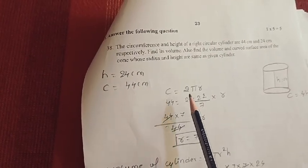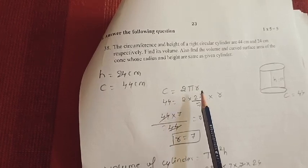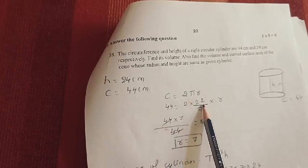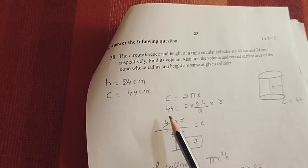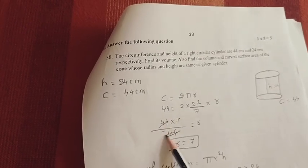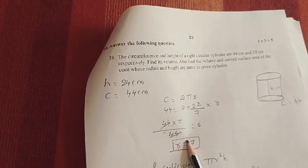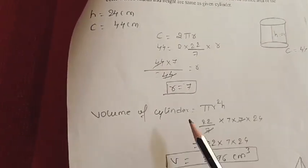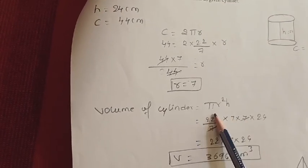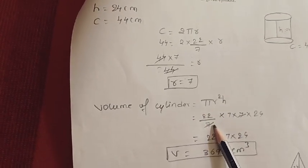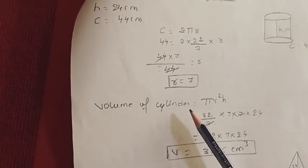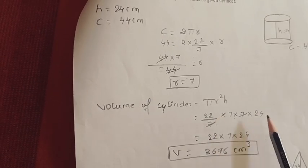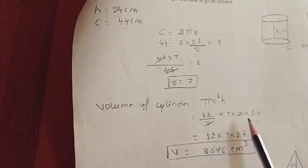Using circumference equals 2πr, with circumference 44 and π as 22/7, we can find the radius r. Solving gives r equals 7 cm. Now the volume of the cylinder formula is πr²h — that is 22/7 times 7 times 7 times 24. Solve this to get the volume of the cylinder.